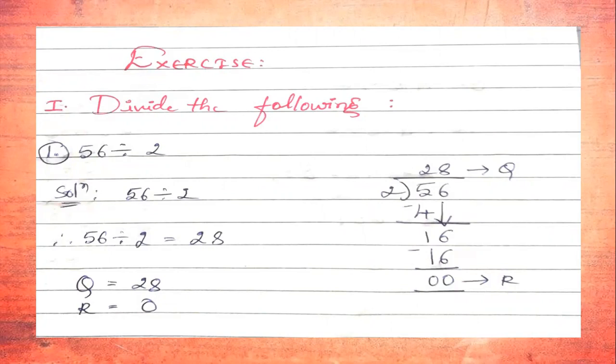The divisor is 2, so we use the 2-times table. The first digit is 5, so we need a number equal to or less than 5. From the 2-table: 2×1=2, 2×2=4, 2×3=6. Since 6 is more than 5, we take 2×2=4. Subtracting 4 from 5 gives us 1.